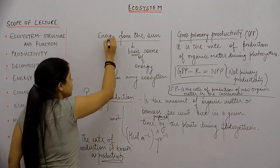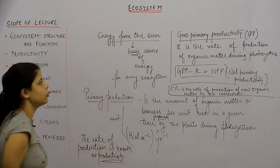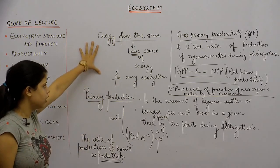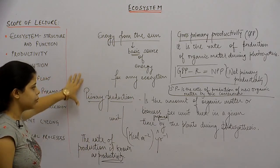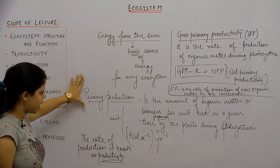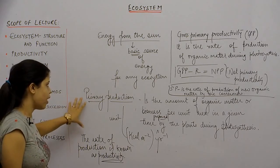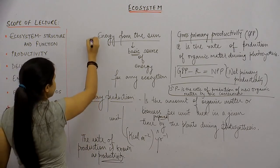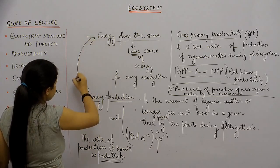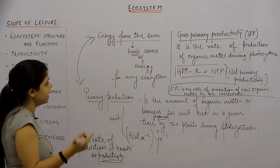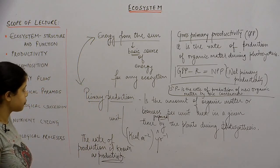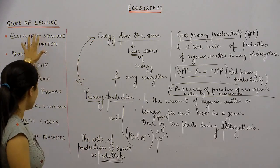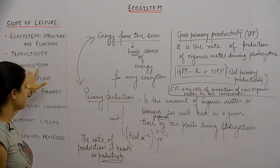We can see how energy is related to productivity: if there was no energy, there would be no produce, and to have a produce, we need energy. So energy and productivity are interlinked. Now we move to our third subtopic, which is decomposition.